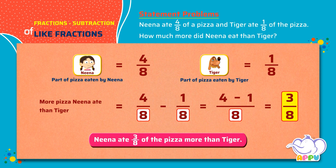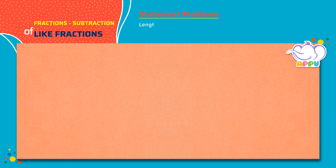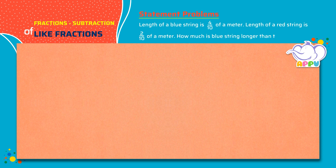Much better! The length of the blue string is 4 by 10 of a meter. Length of the red string is 2 by 10 of a meter. How much is the blue string longer than the red string?